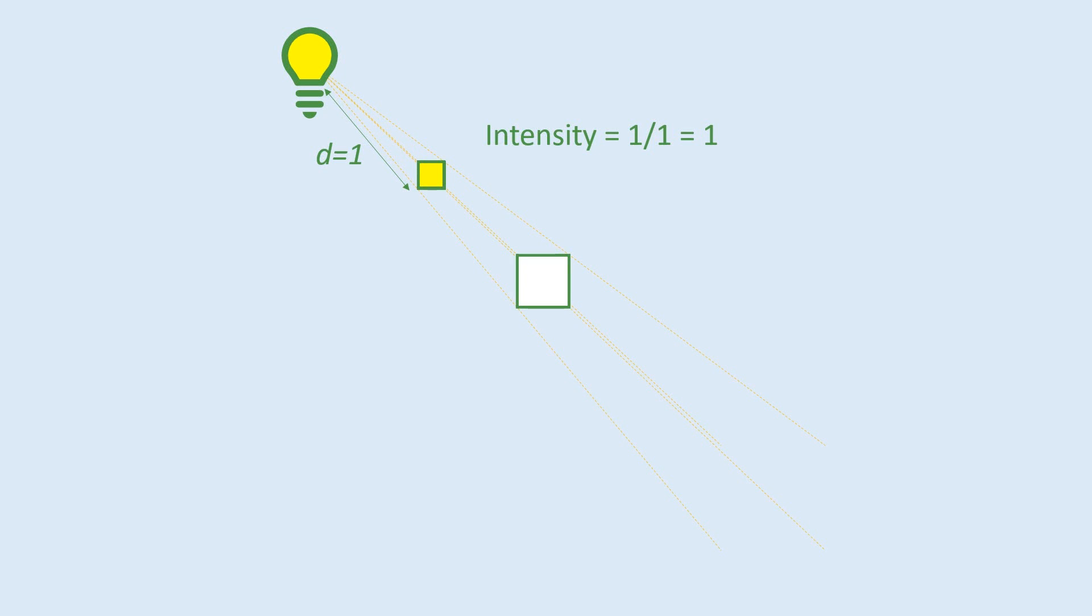If we then tried this experiment again, but with a second piece of paper, but this time held two meters away. Then again, we could think about the intensity. There's no more light. The light has spread out over a larger area.